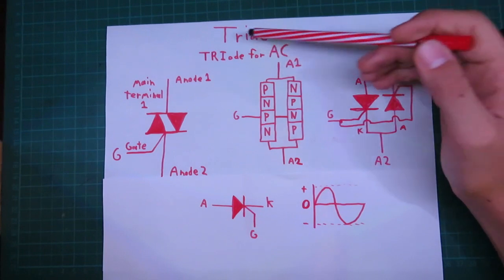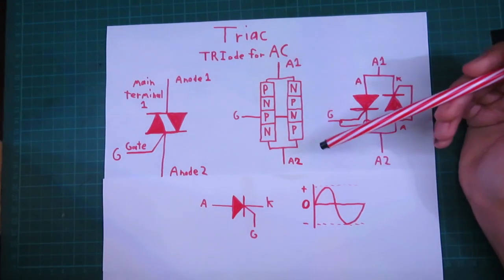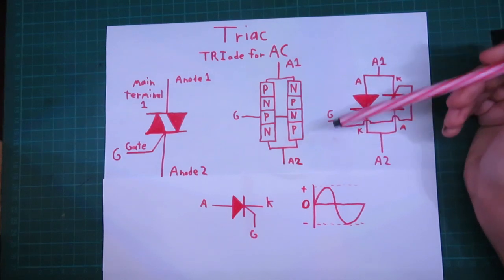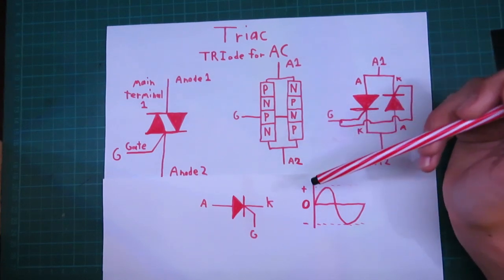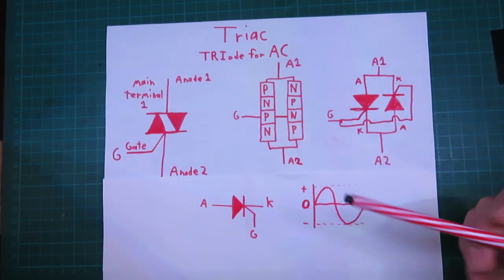The TRIAC. The triode for AC. So, what is a TRIAC? It's basically an SCR for AC. I did a previous video on the SCR, there'll be a link to that in the description down below. Well, we'll just do a quick recap here.